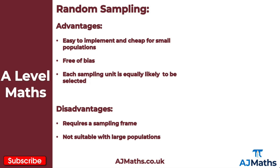Starting with our first sampling method: random sampling. The advantages are that it's easy to implement and cheap for small populations, it's free of bias, and each sampling unit is equally likely to be selected. The disadvantages, however, are that it requires a sampling frame and it's not suitable for large populations.